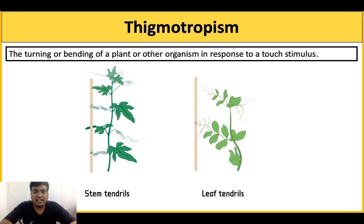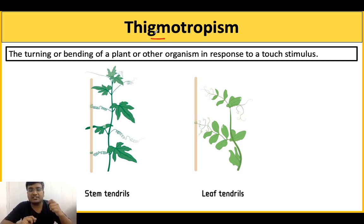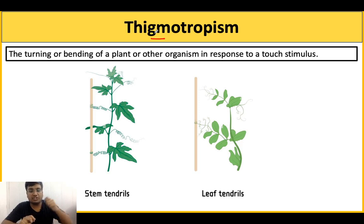Next is thigmotropism, which is basically touch stimulus. If you touch the plant, the plant will grow in the direction of that touch — this is called thigmotropism.